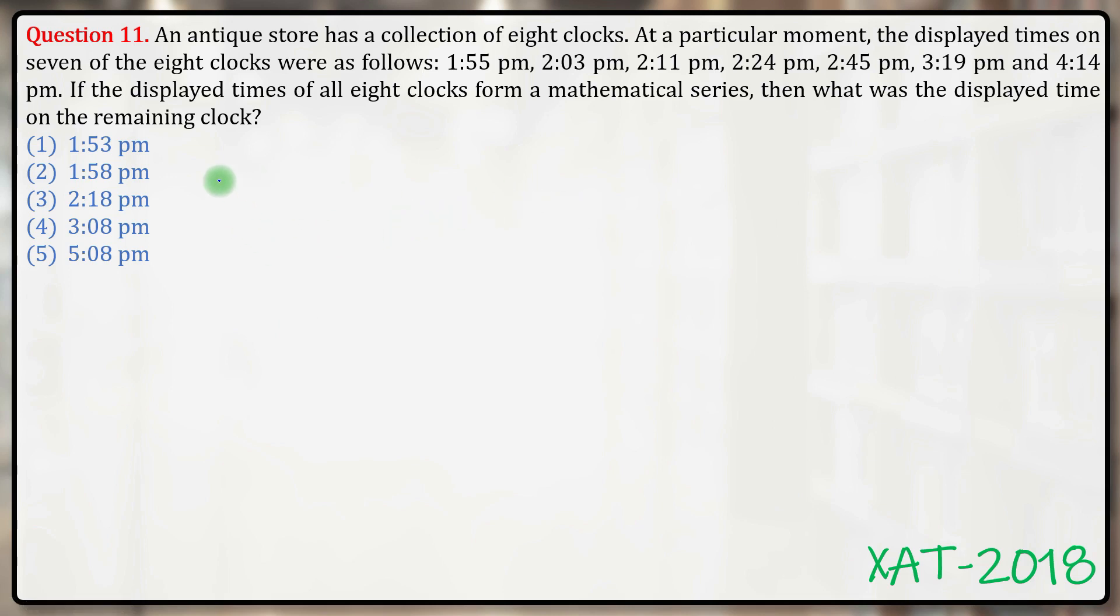1:55, 2:03, 2:11, 2:24, 2:45, 3:19, 4:14. The differences are 8, 8, 13, 21, that's 34, and that's 55.